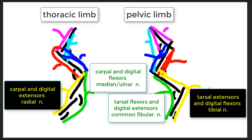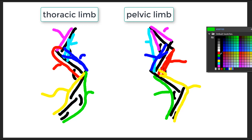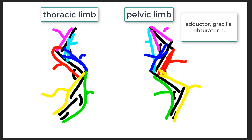A few additional muscles to note: the adductor runs from the hip bone to the caudal aspect of the femur and is innervated by the obturator nerve. It is difficult to find a direct thoracic limb analog. The gracilis spans along the medial aspect and acts as a stifle flexor; it too is difficult to match precisely to a thoracic limb muscle, as it is also a flexor.